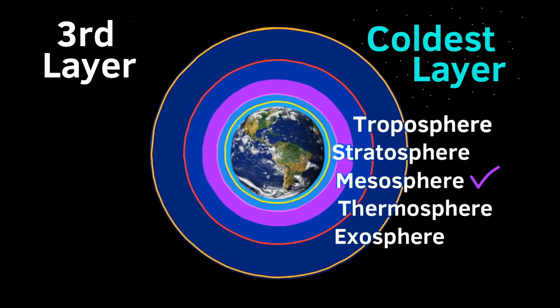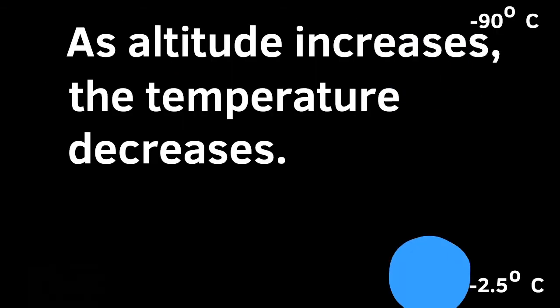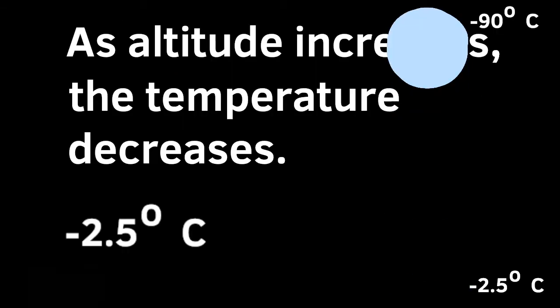The mesosphere is the coldest layer. As altitude increases, the temperature decreases, ranging from about negative 2.5 degrees Celsius to negative 90 degrees Celsius.